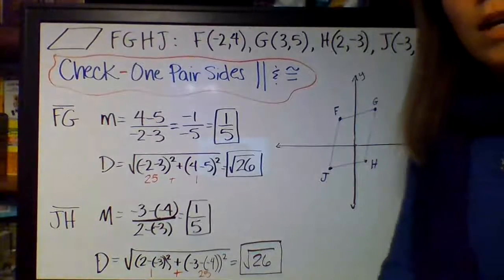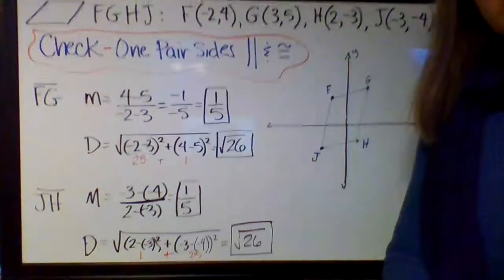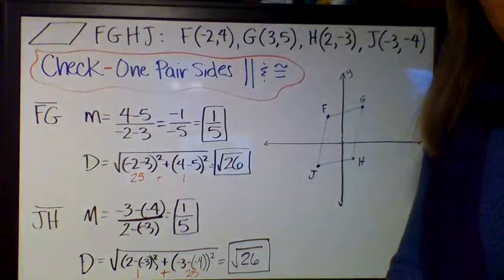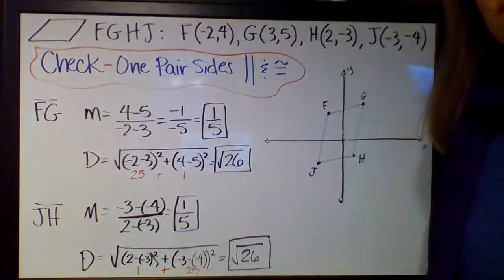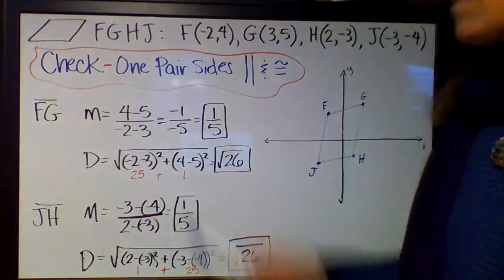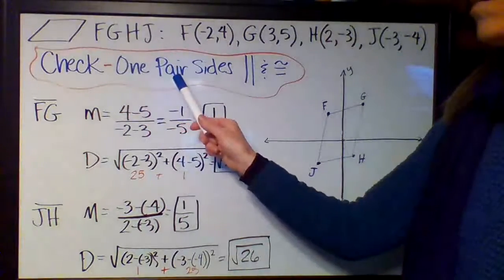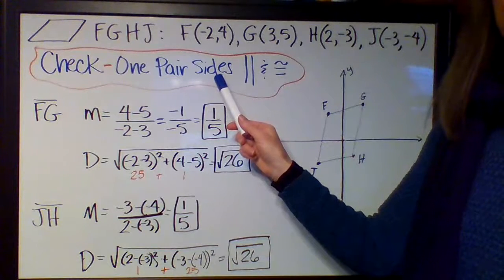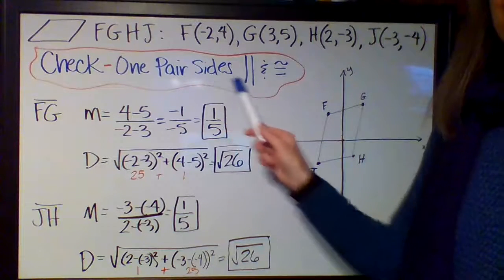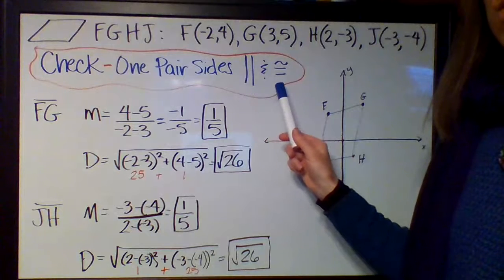On Thursday or Friday, we tested to see whether this was a parallelogram by checking if its diagonals bisect each other. Today we're going to check if one pair of opposite sides, meaning opposite sides not adjacent sides, are both parallel and congruent.